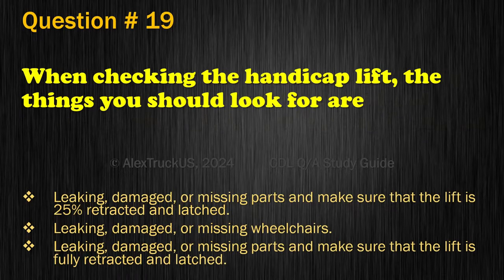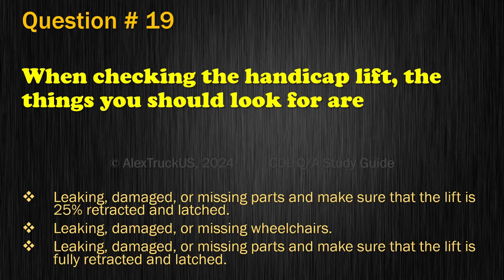Question 19. When checking the handicap lift, the things you should look for are: Leaking, damaged, or missing parts and make sure that the lift is 25% retracted and latched; Leaking, damaged, or missing wheelchairs; or Leaking, damaged, or missing parts and make sure that the lift is fully retracted and latched. The correct answer is: Leaking, damaged, or missing parts and make sure that the lift is fully retracted and latched.